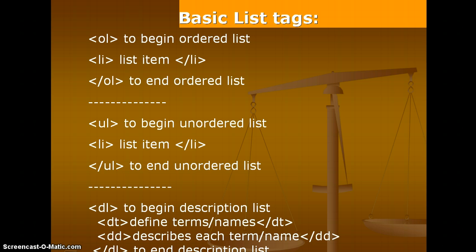The ordered list starts with the ol tag, and after listing all items, we close the ol tag. For the unordered list, it is the same as the ordered list — we start with the ul tag, then use li, which means list item, and then the closing tag of the unordered list. Similarly, for the description list, we use the DL tag.